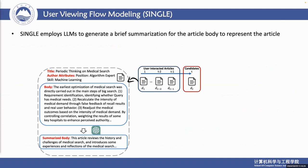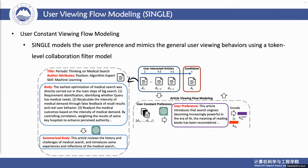Firstly, we regard the article title as a gist and employ the large language model to summarize the article body. Then, to model the user's constant viewing behavior, we use the large language model to extract the user preference from user clicked articles, and then design a flow gating mechanism to control the semantic effects from candidate articles.